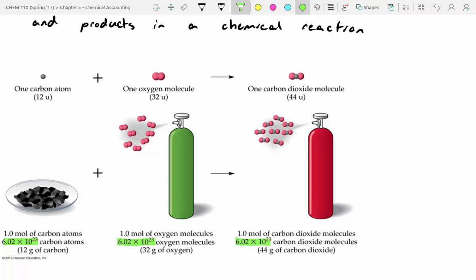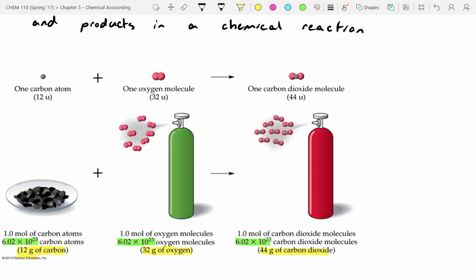Another quantitative relationship is to look at the molar mass. For 12 grams of carbon, you'll need 32 grams of oxygen — that's the molecular weight of O2 — and that will give you 44 grams of carbon dioxide, the molecular weight of CO2. There's a lot going on in these problems, but really it's just a quantitative relationship looking at the ratio of things.